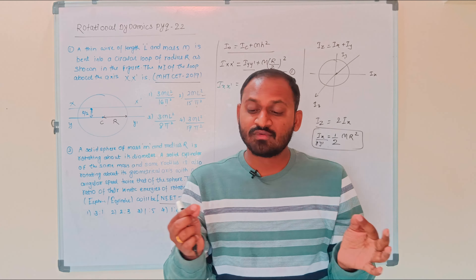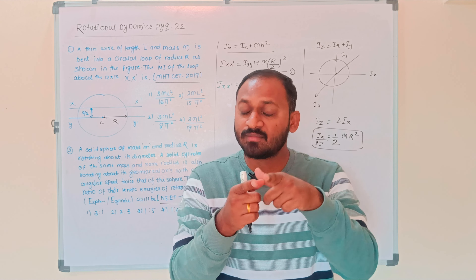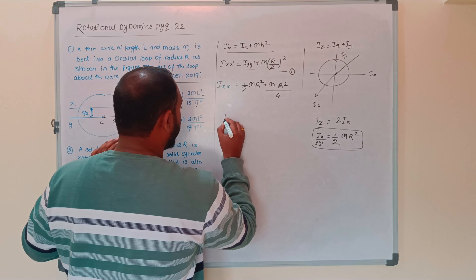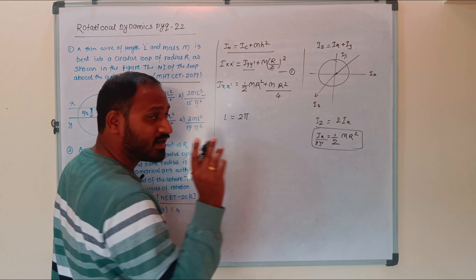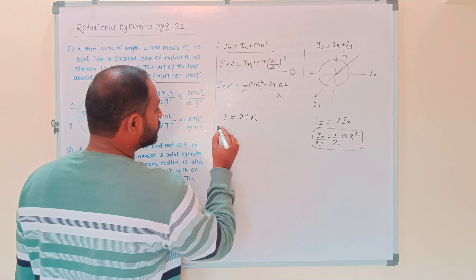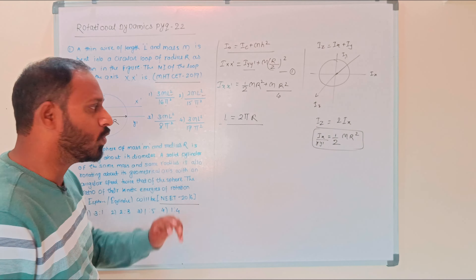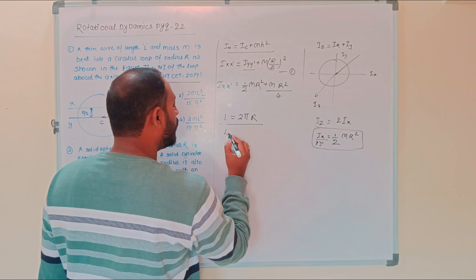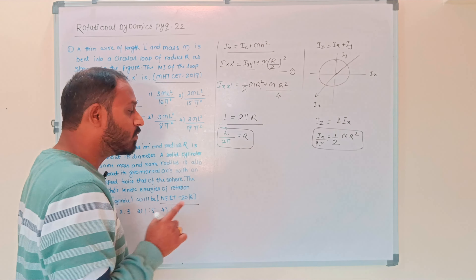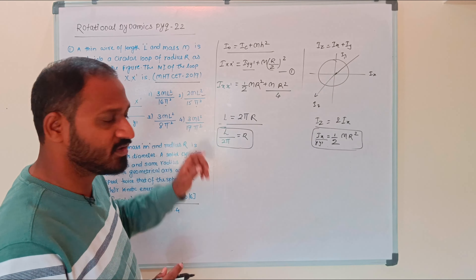The length of the wire equals the circumference of the circle: L = 2πR. Therefore R = L / (2π). Now substituting this value of R in place of R, we get the answer in terms of L and π.